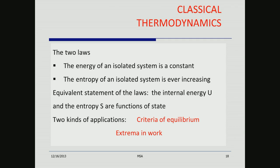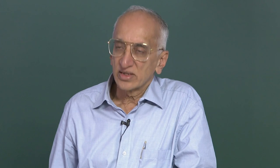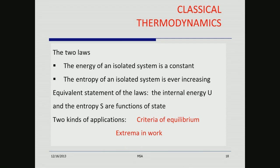Classical thermodynamics is essentially two laws: the energy of an isolated system is a constant, and the entropy of an isolated system is ever increasing. The equivalent statement is that the internal energy U and the entropy S are functions of state. We know other functions of state like pressure, temperature, composition, and volume, but these two were introduced because of the two laws of thermodynamics. Once these are introduced, the rest is practically calculus — you can derive all the results in thermodynamics through calculus. Chemical engineers are interested in two kinds of applications: criteria of equilibrium and work calculations.